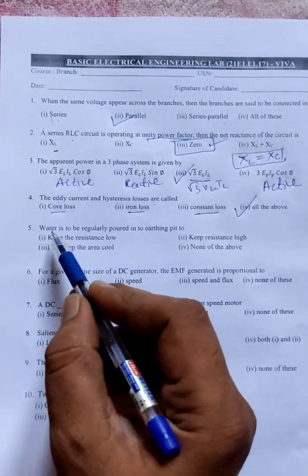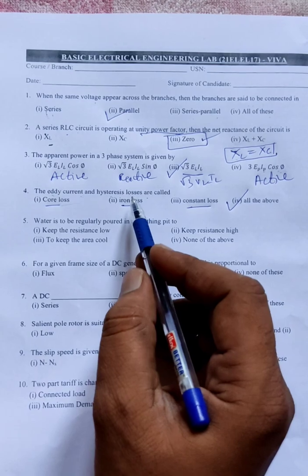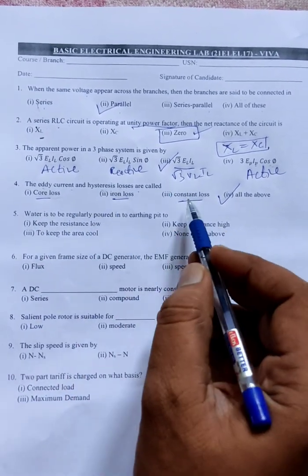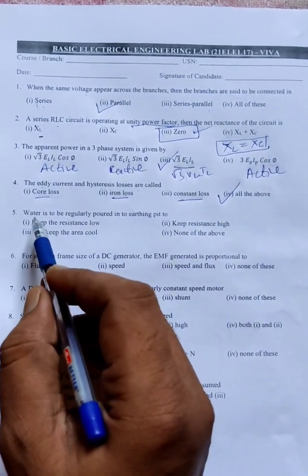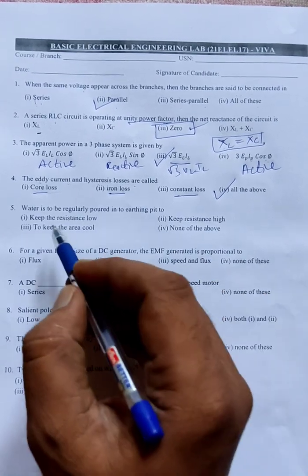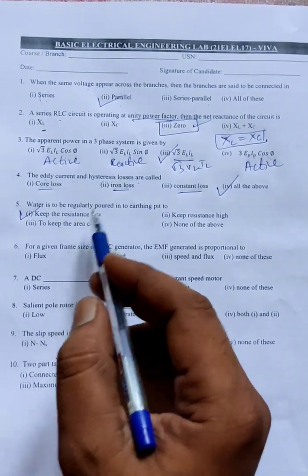Iron losses and hysteresis losses is a type of core losses. Core loss is called iron, and iron is also called constant loss, so all of the above is the correct option. Water is to be regularly poured into the earthing pit to keep the resistance low. The same question is repeated from the previous set - you can watch Set 2, I gave an explanation there.